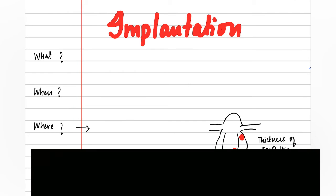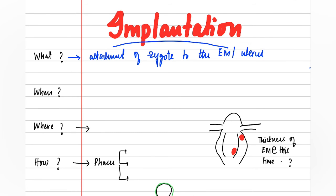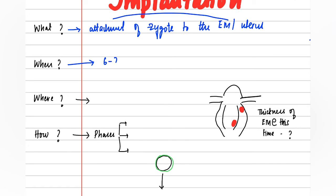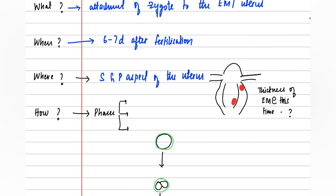The next topic is implantation. What is implantation? Implantation is the attachment of the zygote to the endometrium or the uterus. When does implantation occur? It occurs almost six to seven days after fertilization. Where does implantation occur? It usually occurs in the superior and posterior aspect of the uterus. There are two types of implantation: the first is superficial, and the second is deep or interstitial — this is the type that occurs in humans.